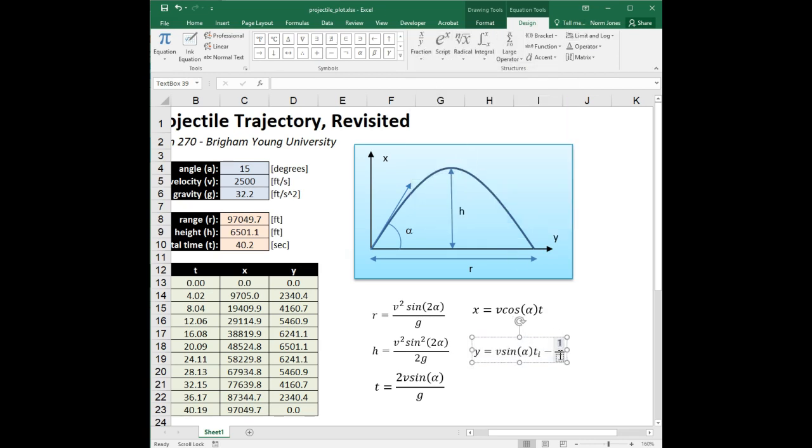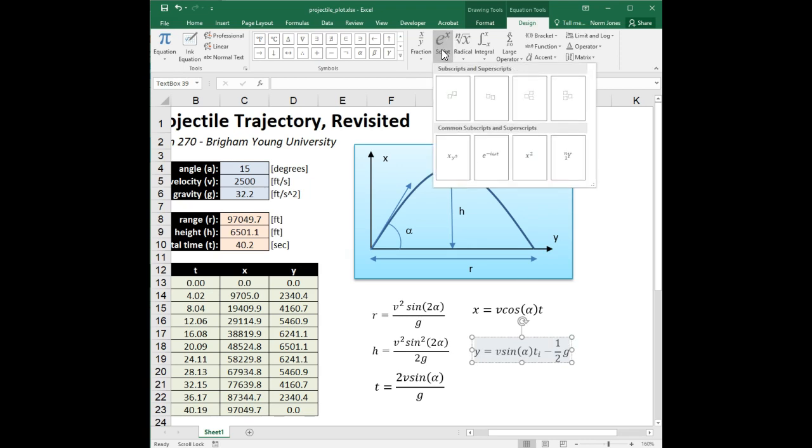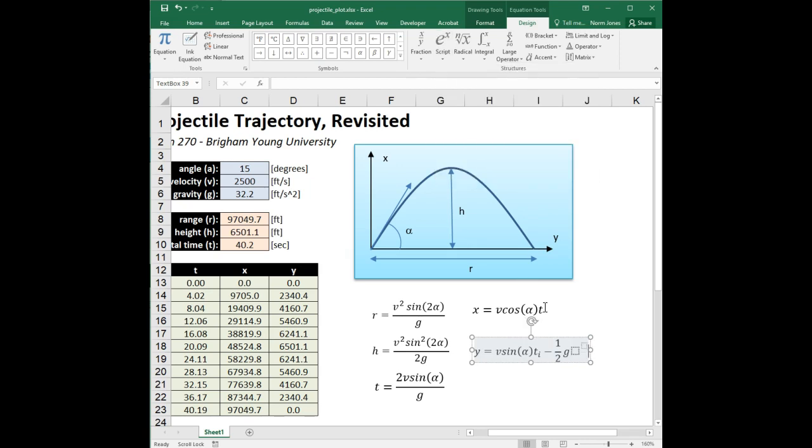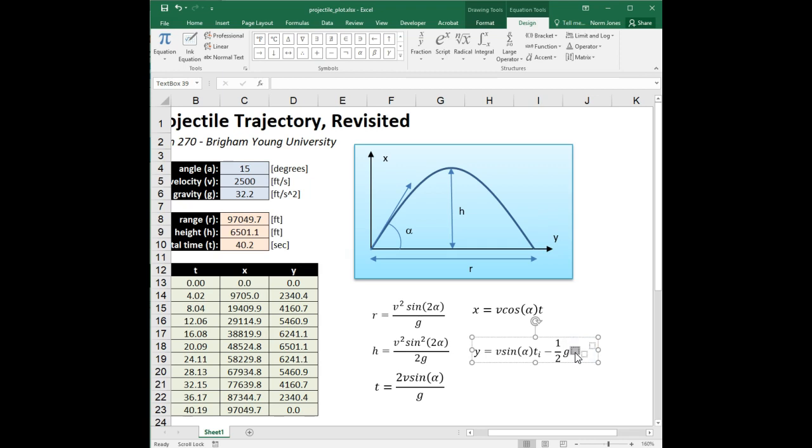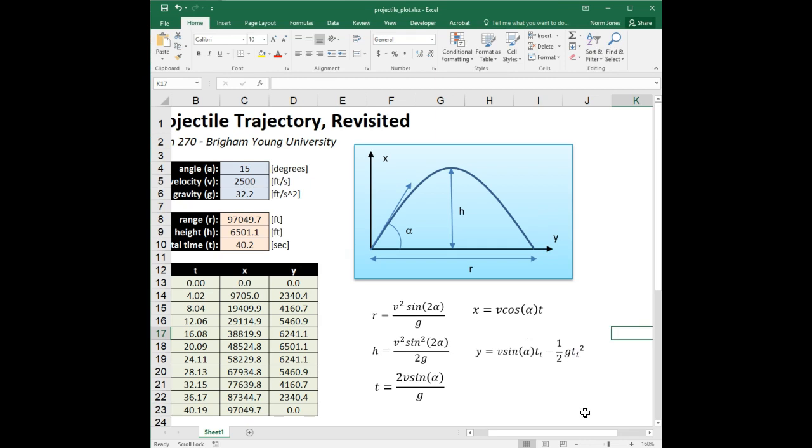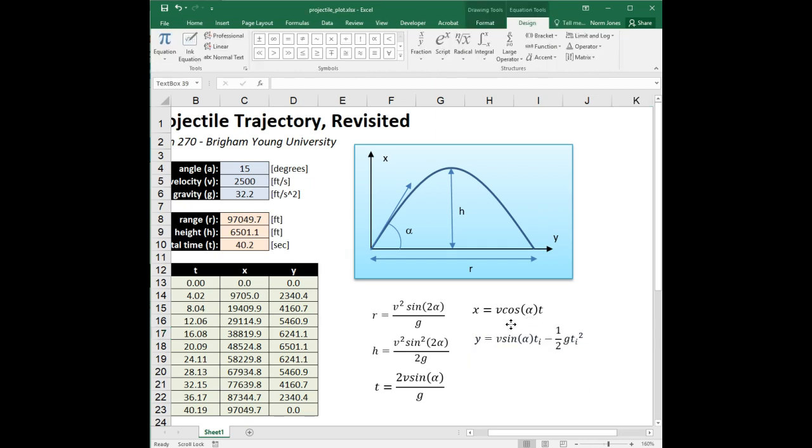We'll say one half, right arrow key to get me back up to the main level, g, and then for t squared we do the superscript. Actually hang on a second, this should be ti squared, so inside here I'm going to do a subscript, and this will be ti squared just like that. There you have it.